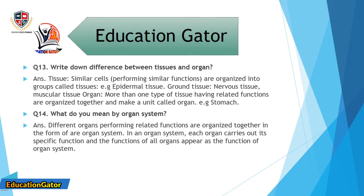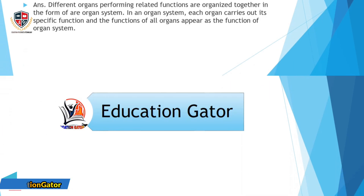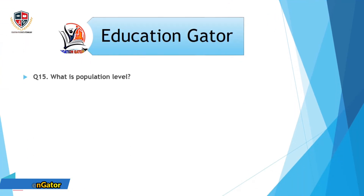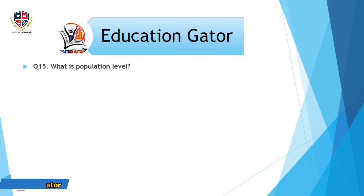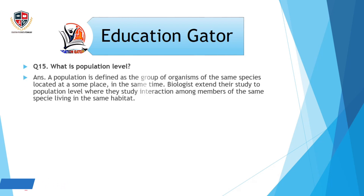Question number 14: What do you mean by organ system? Ans. Different organs performing related functions are organized together in the form of an organ system. In an organ system, each organ carries out its specific function and the functions of all organs appear as the function of the organ system.